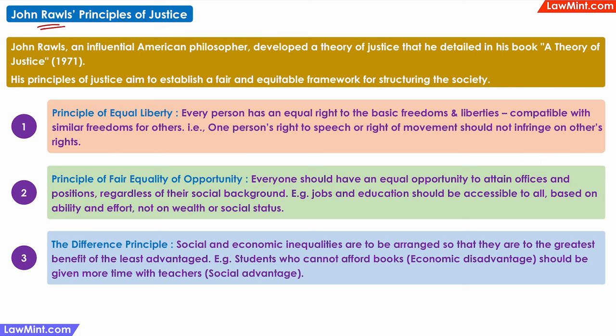John Rawls was an American philosopher. He proposed a theory of justice in his 1971 book. The theory of justice that he proposed is based on three underlying principles. The first one is the principle of equal liberty, which says that every person has an equal right to basic freedoms and liberties such as freedom of speech, freedom of movement, freedom of religion, etc. But the exercise of one person's freedoms should not negatively affect another person's rights or freedoms. For example, if a person exercises his or her right to speech, then such speech should not infringe on another person's right to privacy or right to dignity. You will notice that the concept of fundamental rights in our constitution aligns with this principle.